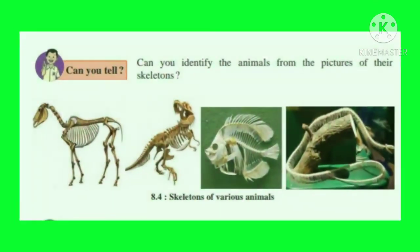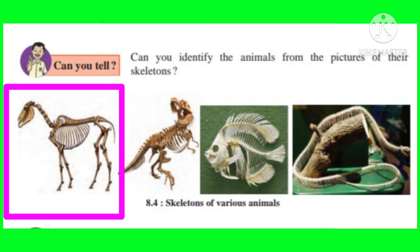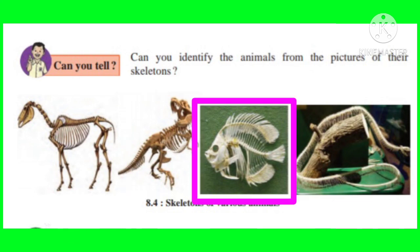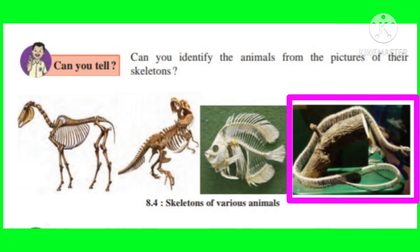Can you identify the animals from the pictures of their skeletons? The first picture shows the skeleton of a domestic dog, the second is a flying dinosaur, the third is a fish, and the fourth is the skeleton of a snake.